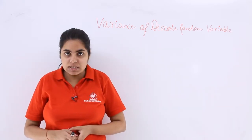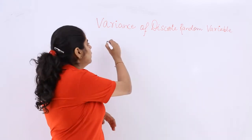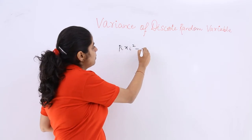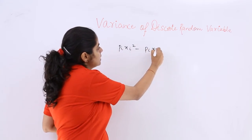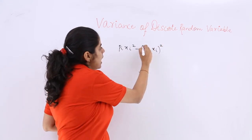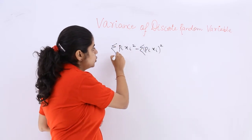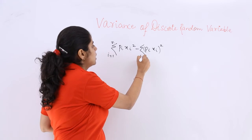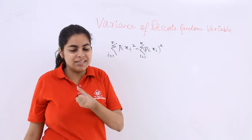The variance is given as Σ pi xi² minus (Σ pi xi)², where the summation i goes from 1 to n. This is the formula for variance.